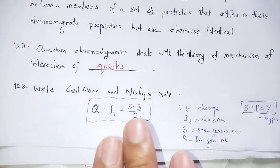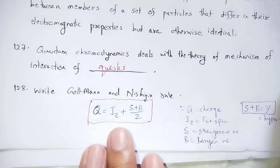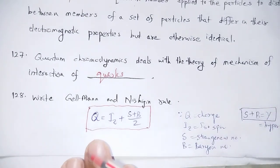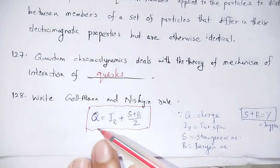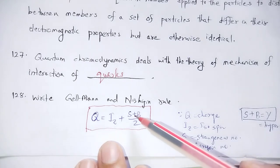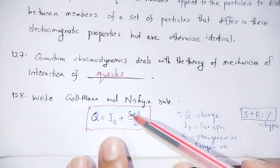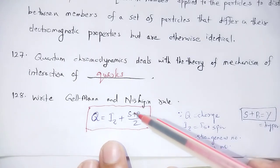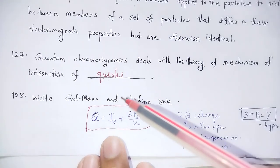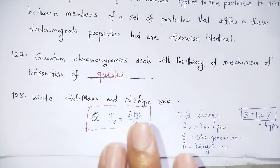Using the Gell-Mann–Nishijima rule Q = Iz + (S + B) / 2, we can calculate the charge of any particle when the three quantities are given. This formula allows us to derive and calculate charge from the other quantum numbers.